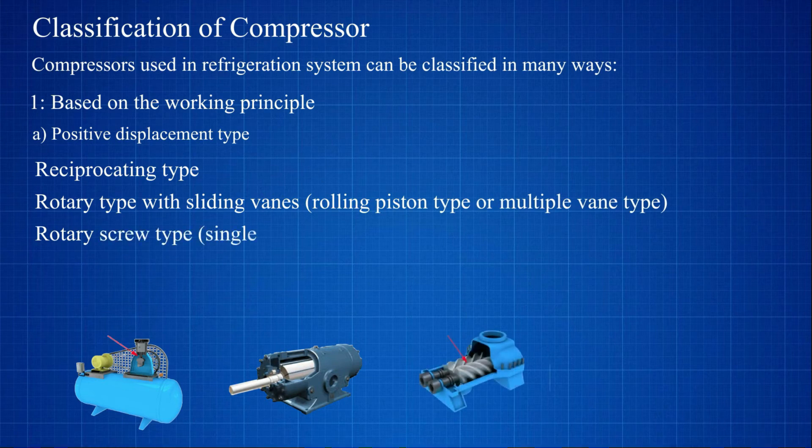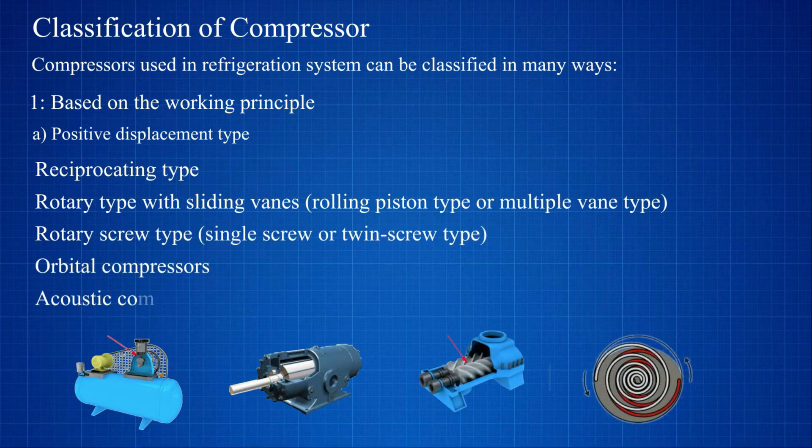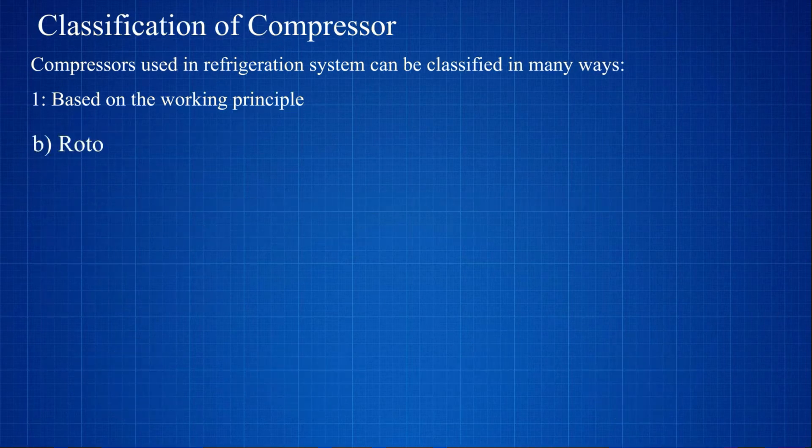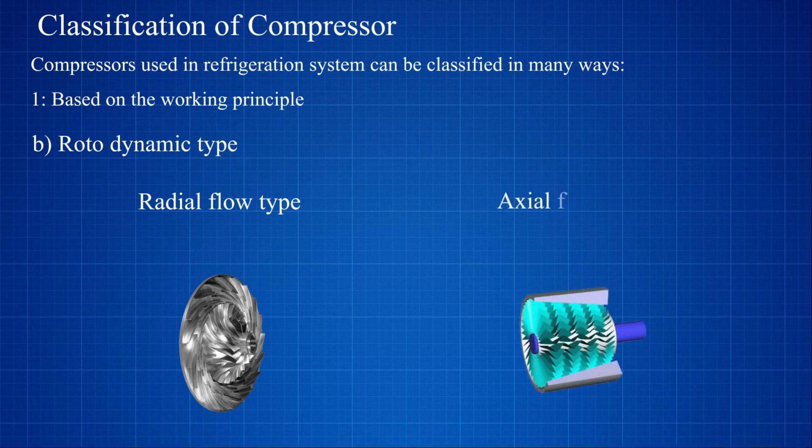Rotary screw type, single screw or twin screw type, orbital compressors, acoustic compressors. B) rotodynamic type - radial flow type, axial flow type.